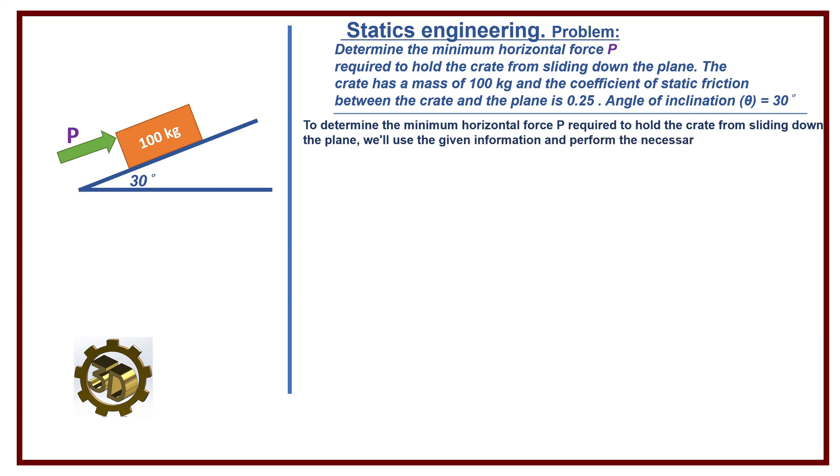Given: mass of the crate m equals 100 kg, coefficient of static friction mu s equals 0.25, angle of inclination theta equals 30 degrees, acceleration due to gravity g equals 9.81 meters per second squared, standard value.